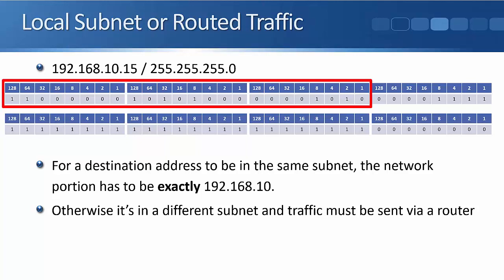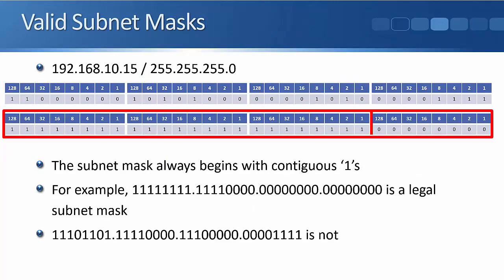The subnet mask always begins with a contiguous block of ones, which is different from the IP address. With an IP address, the ones and zeros can be mixed in pretty much any order. The subnet mask is always a block of ones followed by a block of zeros — we never mix them. For example, ones then zeros is a legal subnet mask, but mixing ones and zeros — such as 11101101 — is not a valid subnet mask.